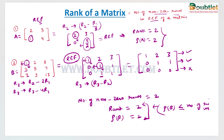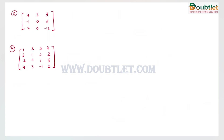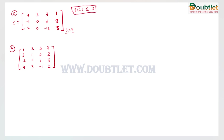Now we will discuss another example to get more clarity. This is a three-by-four matrix — a non-square matrix with three rows and four columns. We need to find the rank of matrix C, so rank of C should be less than or equal to three. We will now find the row echelon form of this matrix.